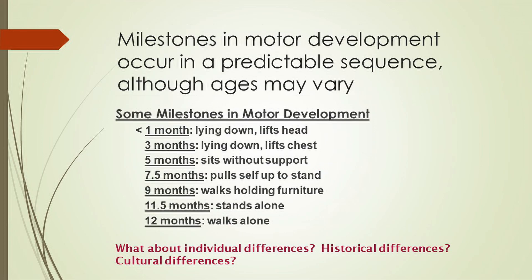If you look at motor development in a child as a series of milestones, it again appears to be both cephalocaudal and proximodistal. When a child is less than a month of age and lying down, the child can lift its head. At about three months of age, while lying down, the child can lift not just the head but also a portion of the chest. At five months of age, typically a child can sit without support. Later the child can pull herself or himself up to a standing position, then walk while holding furniture or someone's hand, and ultimately stand alone and walk alone.